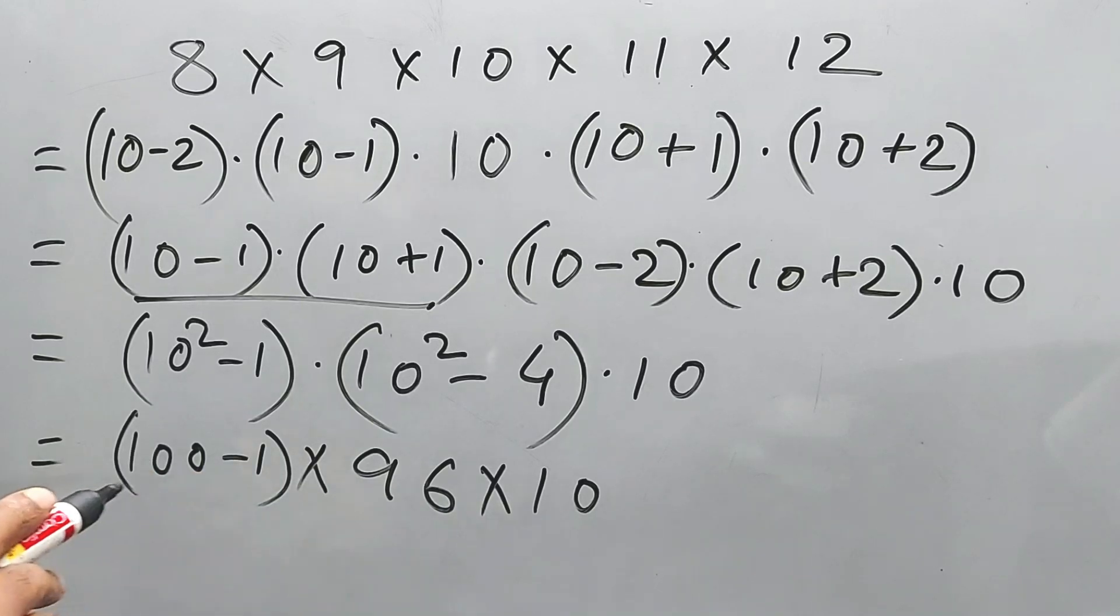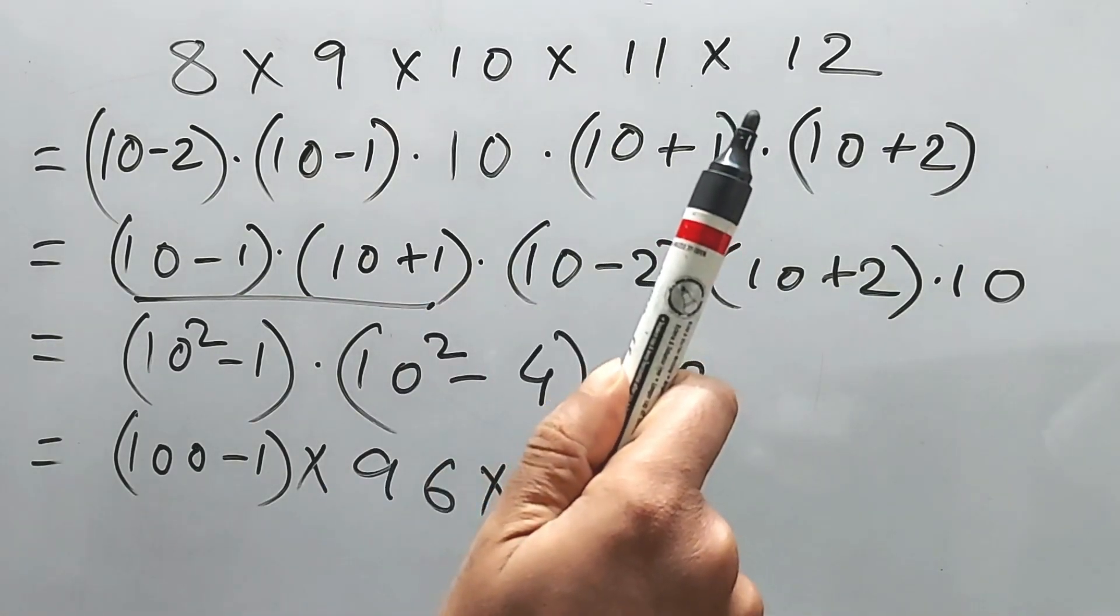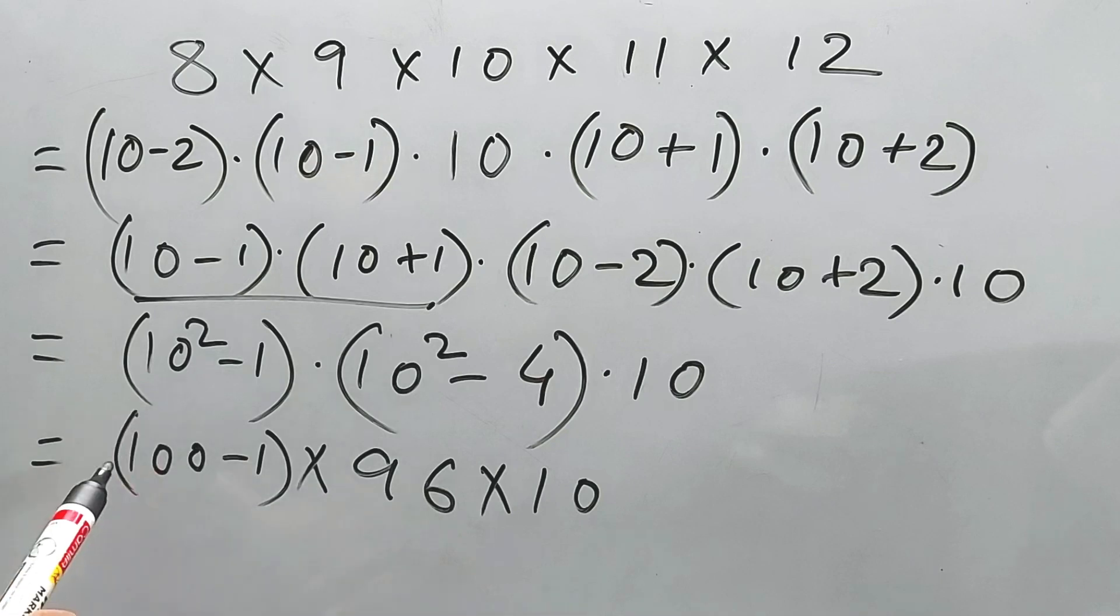That is what we have kept this in the 100 minus 1. We can do it with 99 also. Do you know the multiplication of 99? If you don't know, don't worry, just see it in the i button. Now 96 into 100 is 9600, and 96 into 1 is 96, definitely.